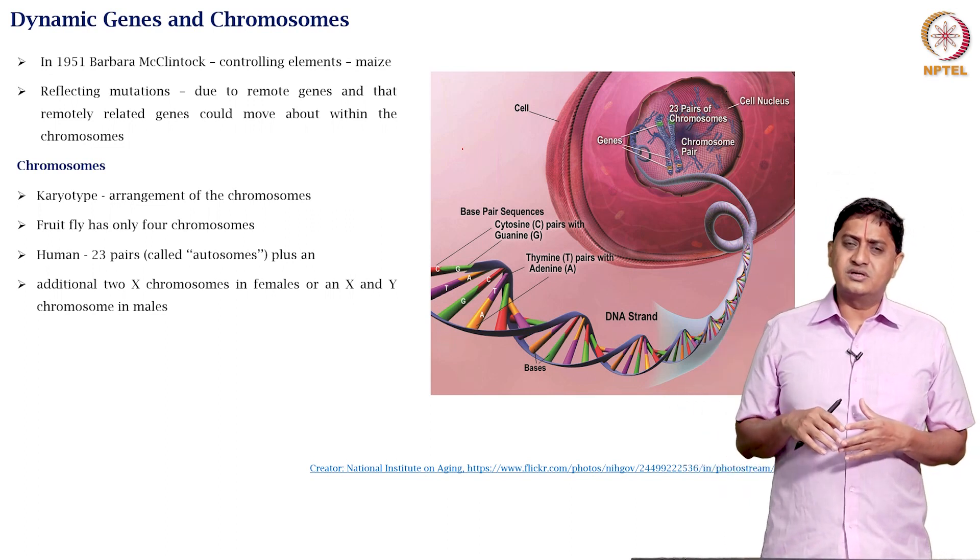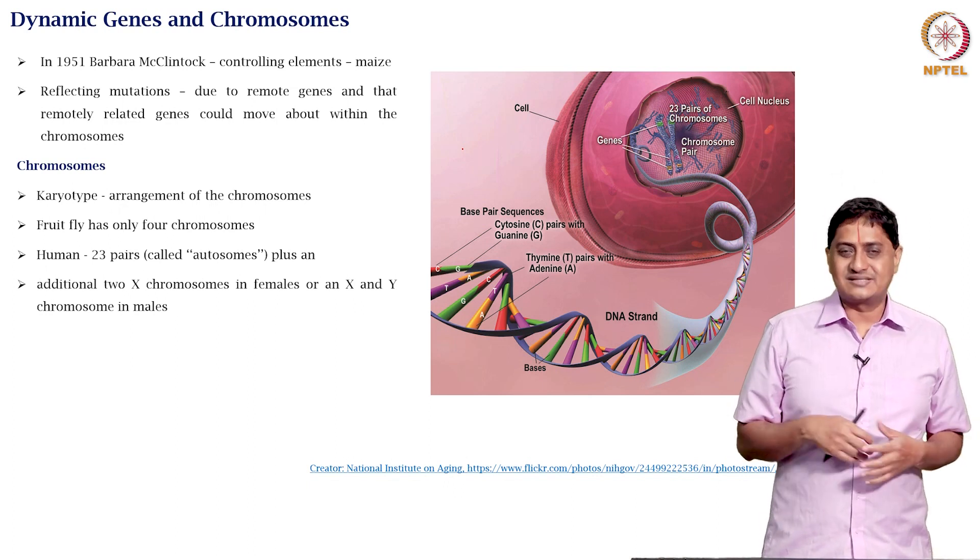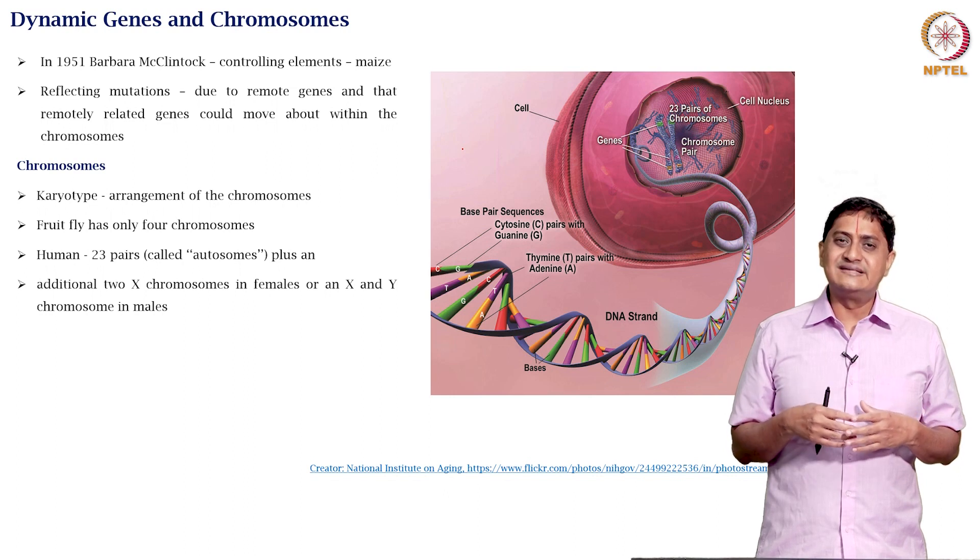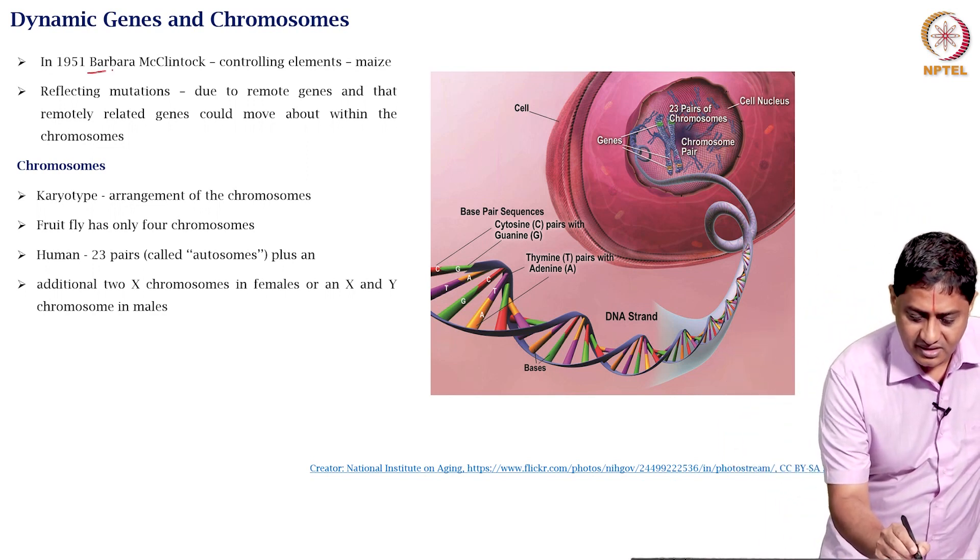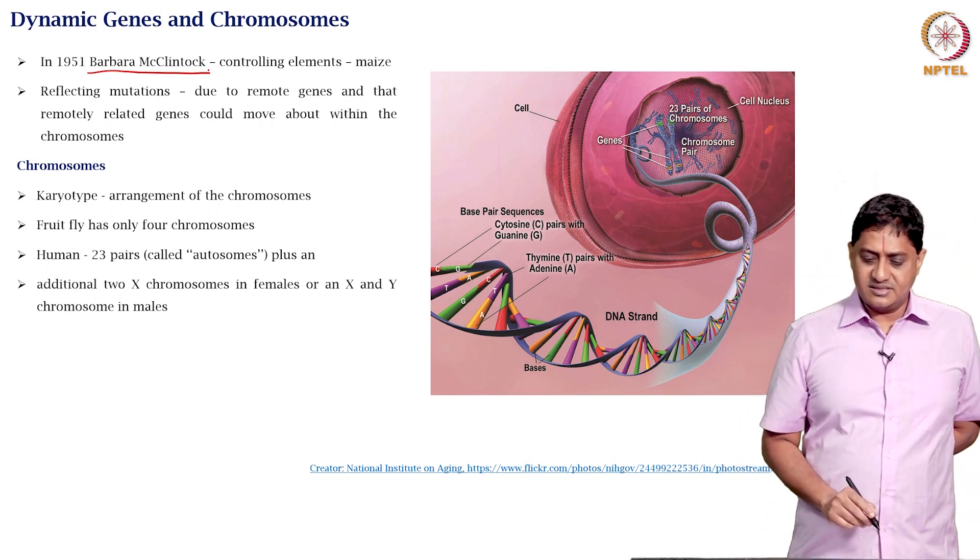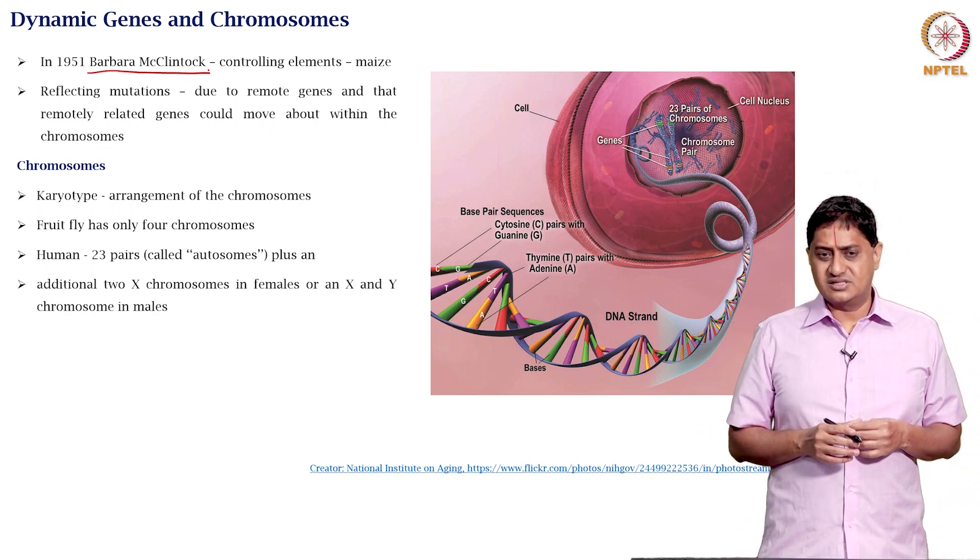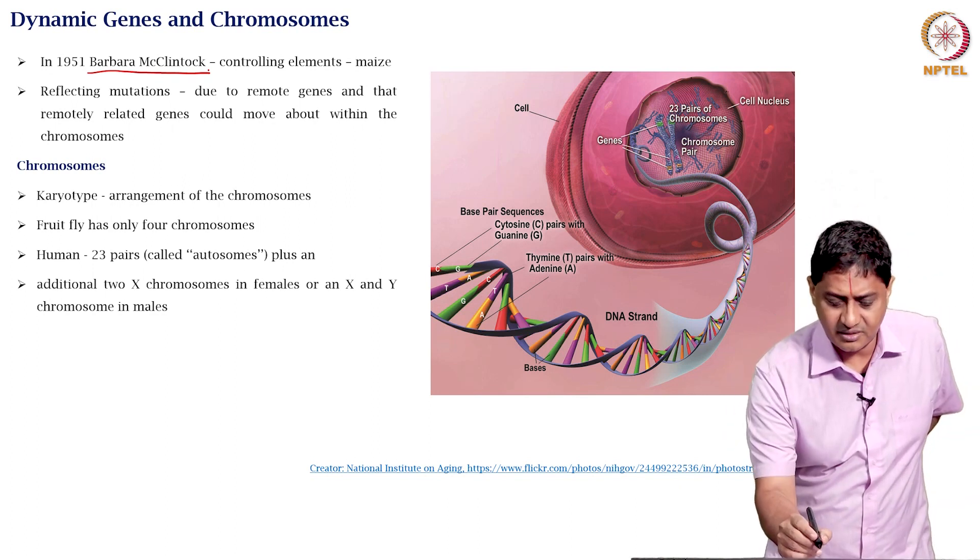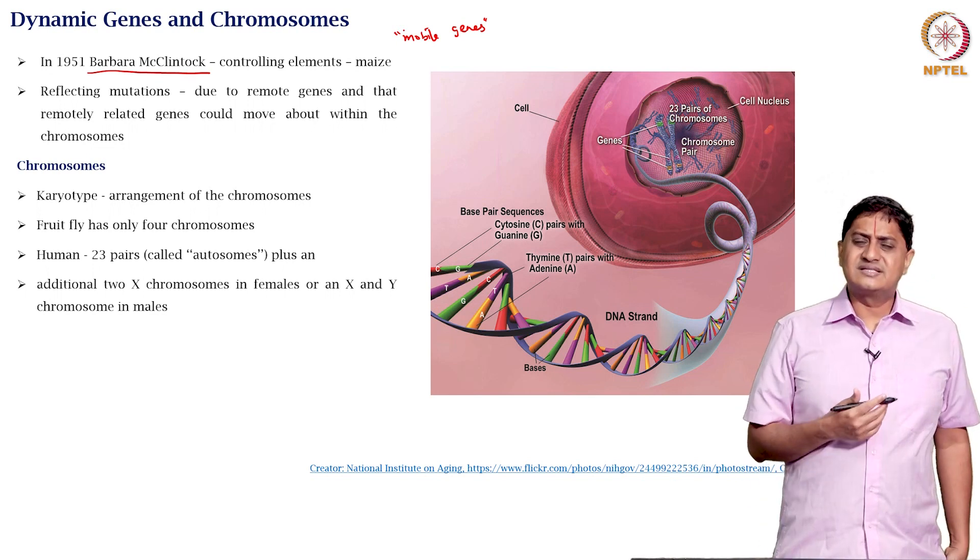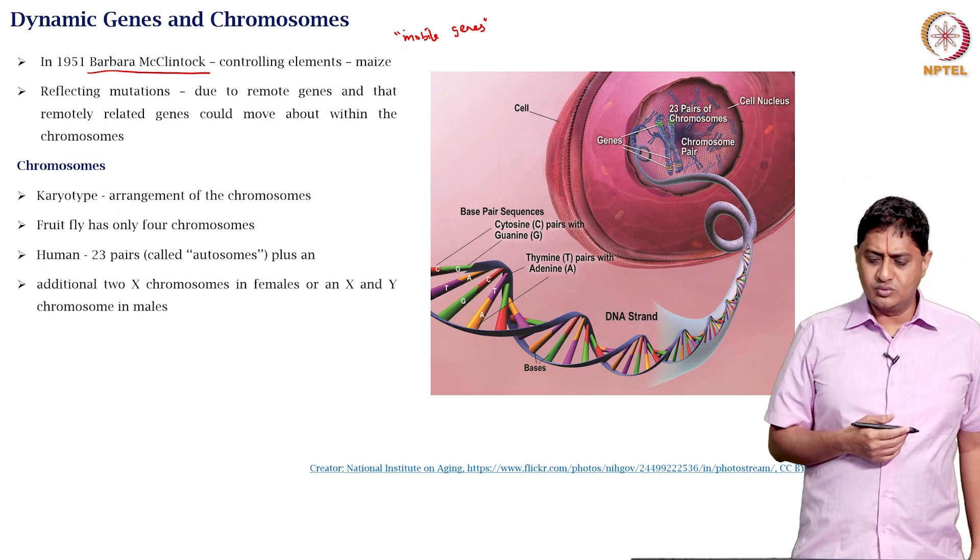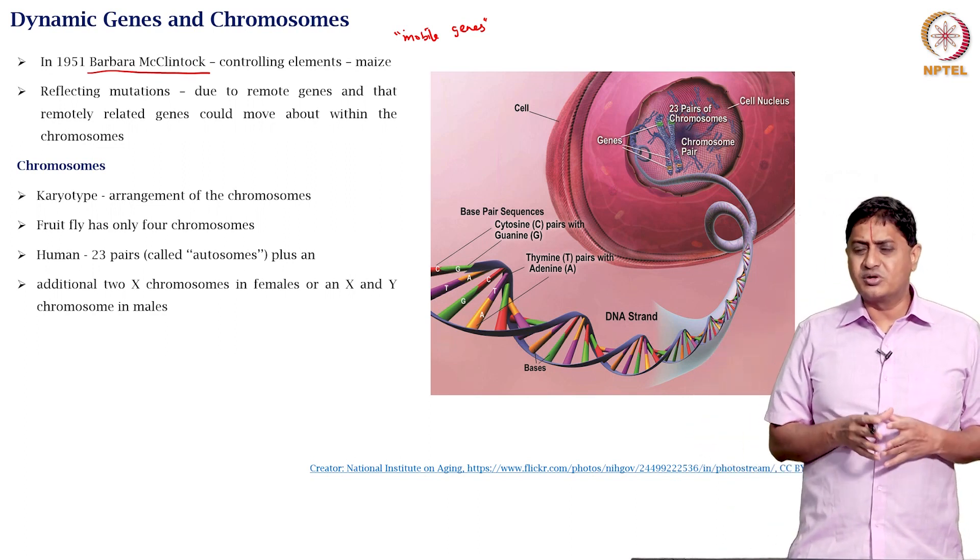There was also continued interest in the tradition of Mendel. Remember how Mendel studied plants and suggested some interesting insights on the nature of heredity. In that line, Barbara McClintock studied Indian corn or maize and suggested there are some moving controlling elements that she called mobile controlling elements, later to be called mobile genes. These reflected mutations possibly due to genes that move about, or that remotely related genes could move about within the chromosome.